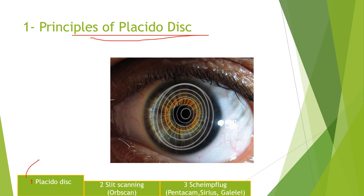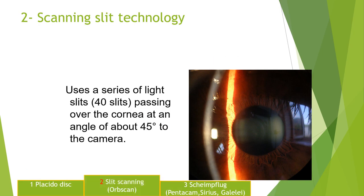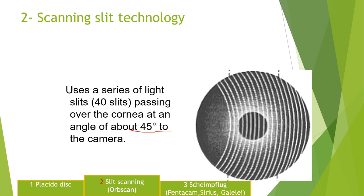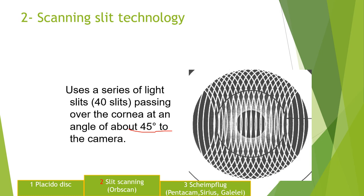Now we are going to the slit scanning. In slit scanning it's just like the slit on the slit lamp — you throw one slit and that gives you a thickness of the cornea. In the scanning slit technology, you throw 40 slits from the left hand side at an angle of 45 degrees, and then 40 slits from the right hand side, and the combined 80 slits give you the elevation data.